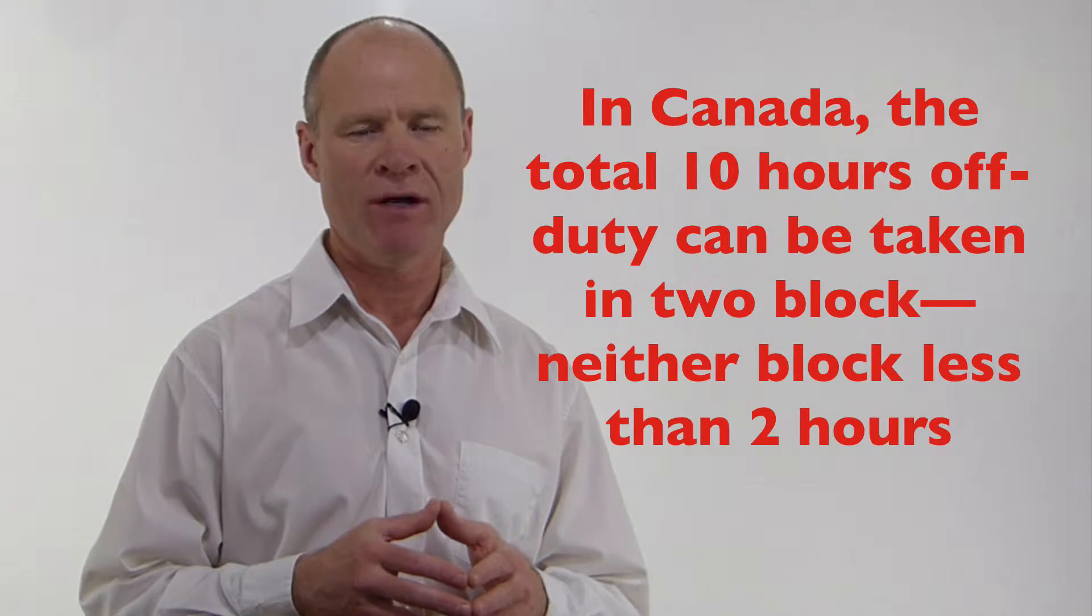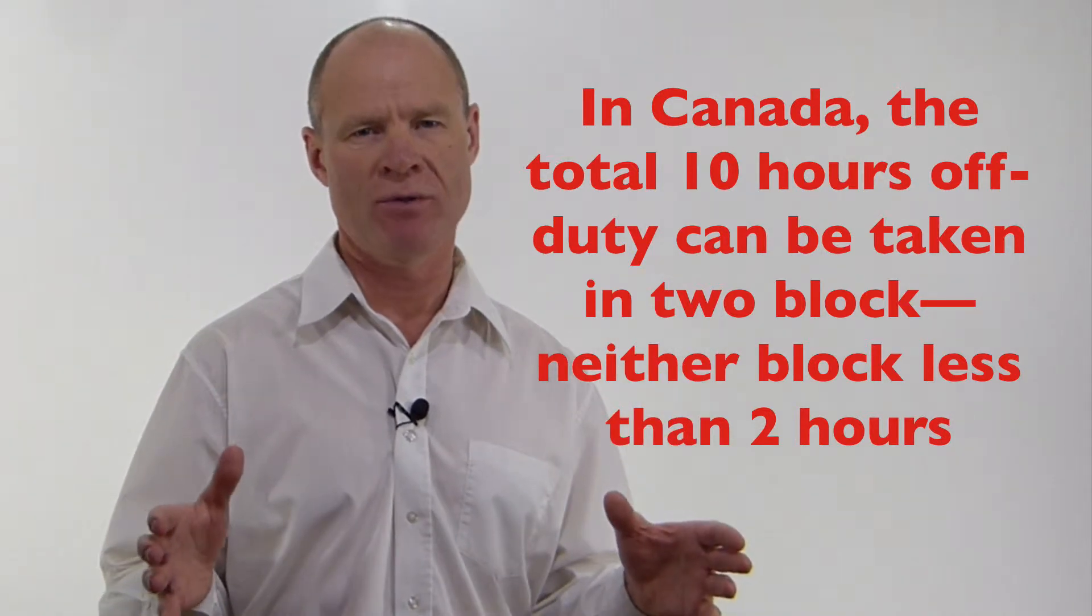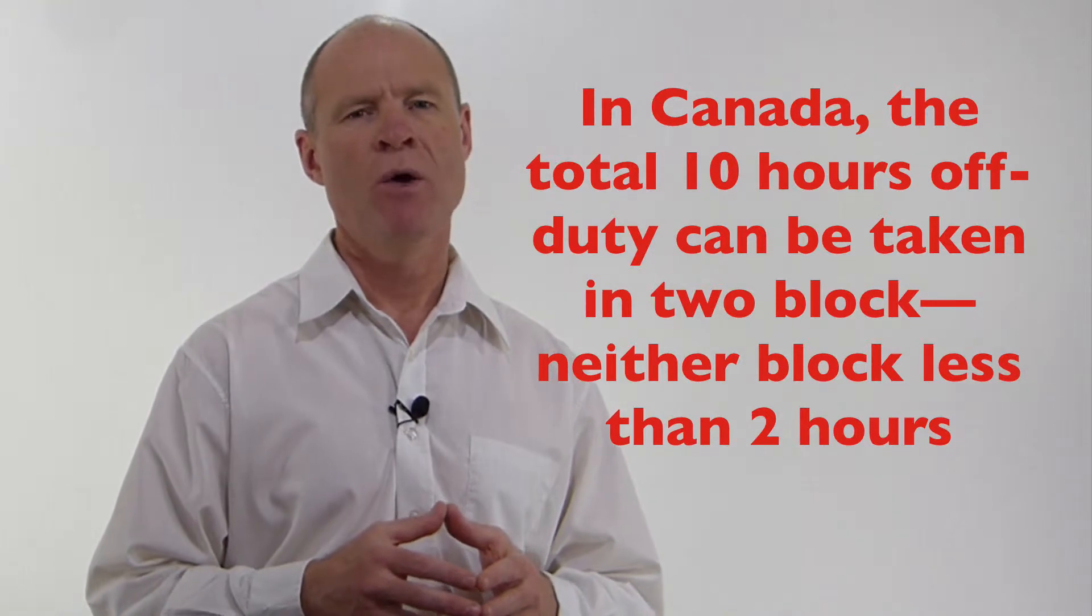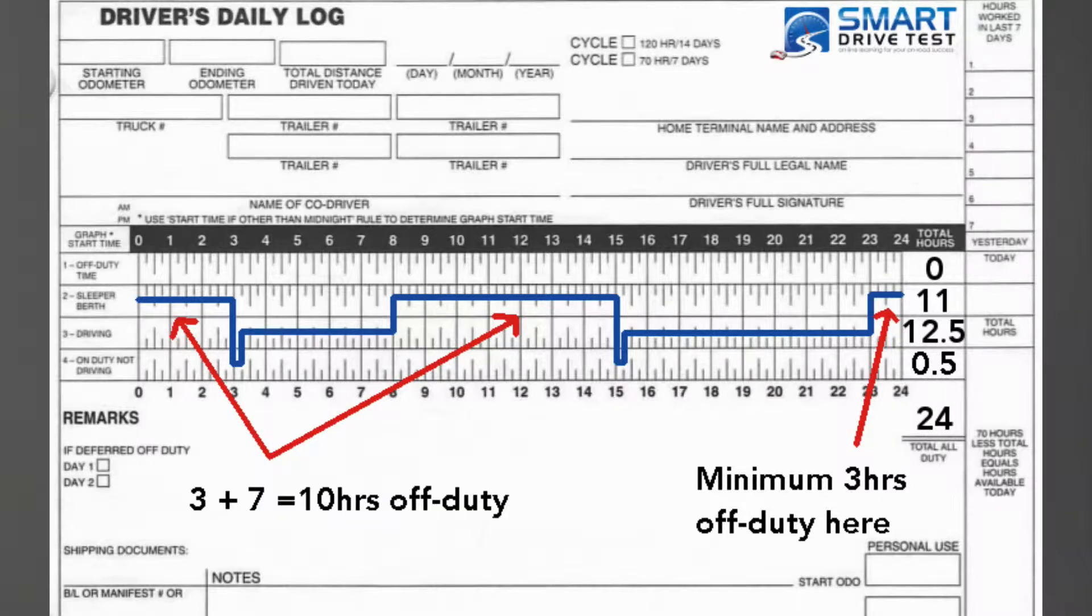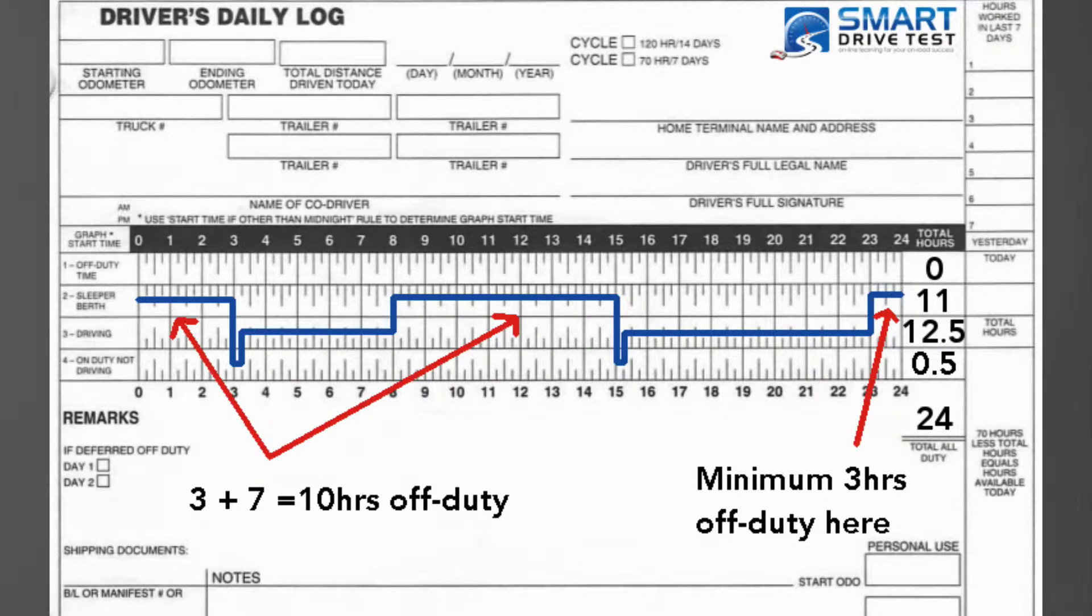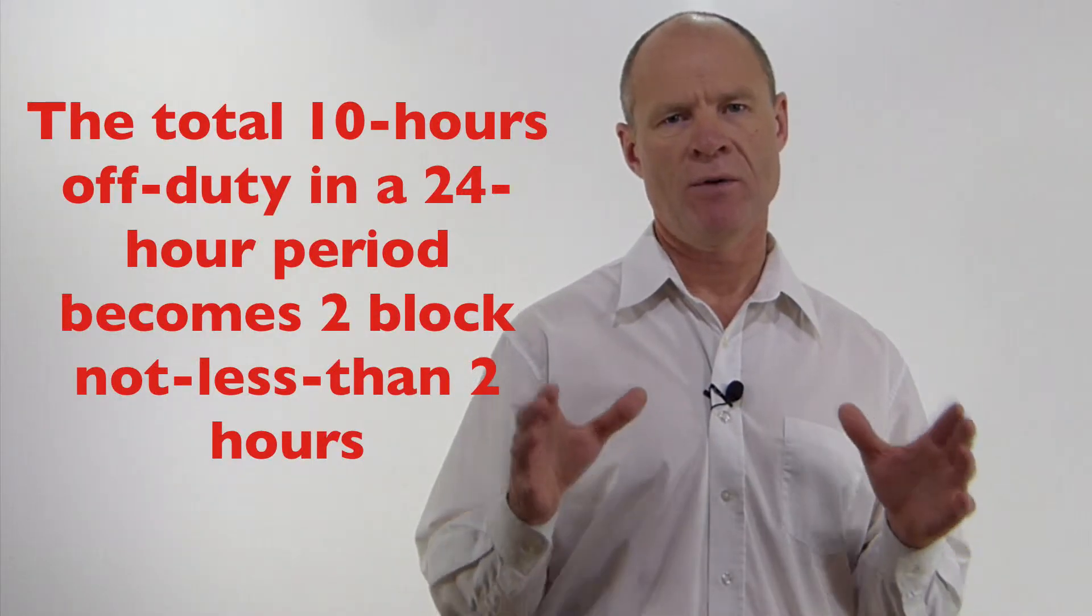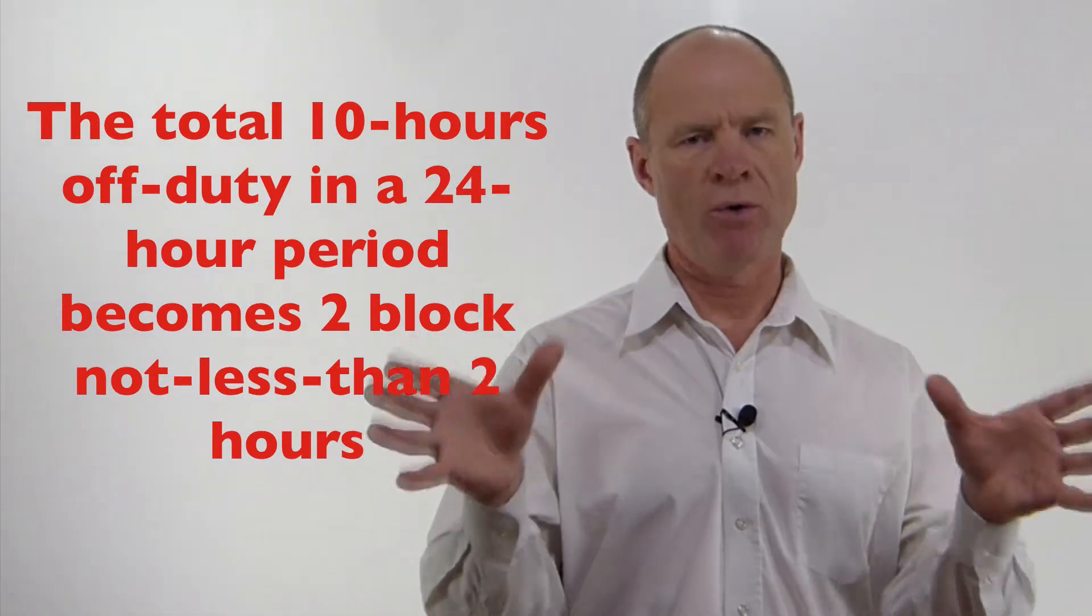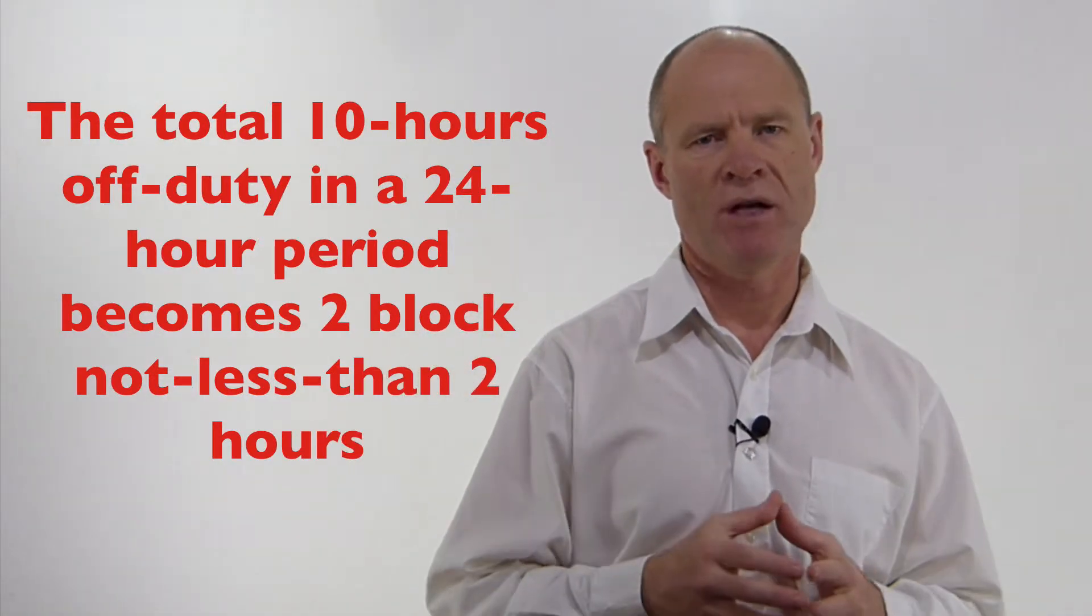Hi there, Rick. Welcome back talking to you today about advanced logbook techniques in Canada. For the single driver, you can take your off-duty time in a 24-hour period, which is 10 hours, and divide it into two blocks. One block, not less than two hours. So if you have one two-hour block, the other block has to be eight hours. If you have one three-hour block, the other off-duty block has to be seven hours. The ten hours is not one consecutive eight-hour block and two additional hours. That whole ten-hour period becomes two blocks of time now.